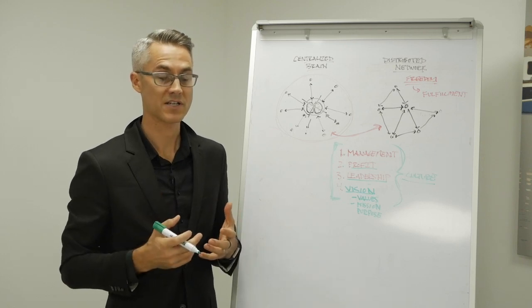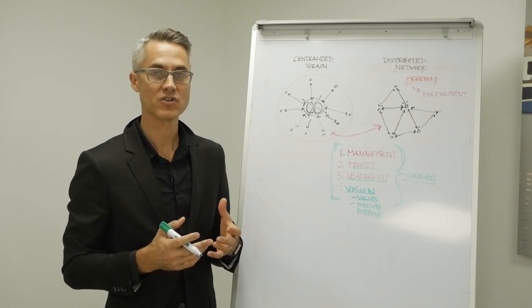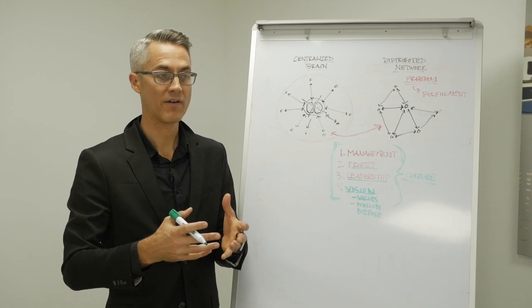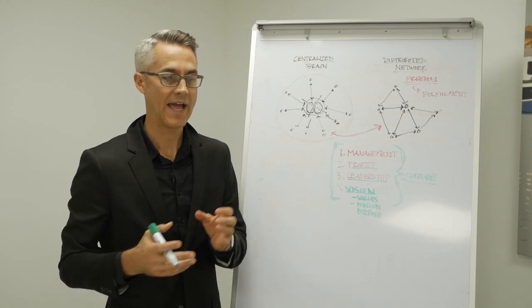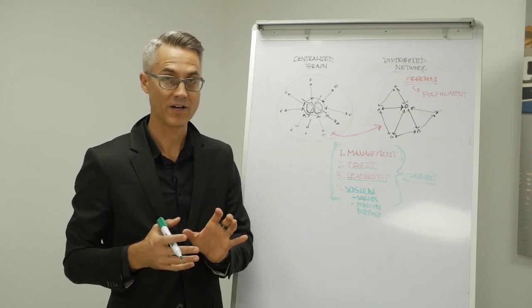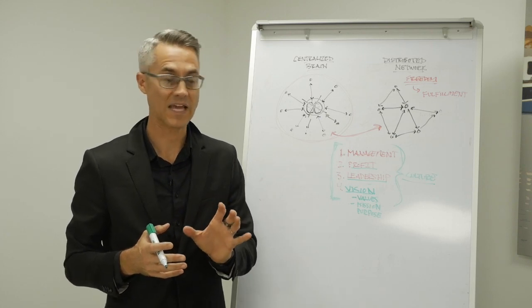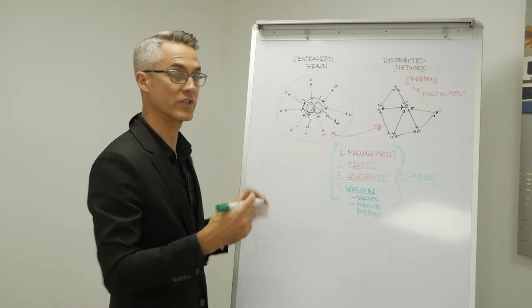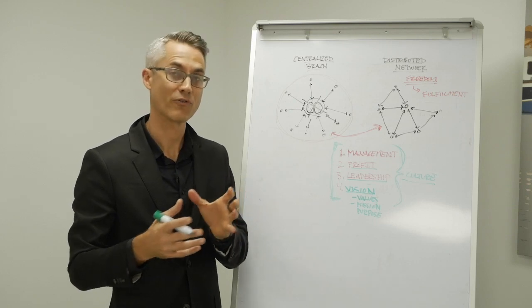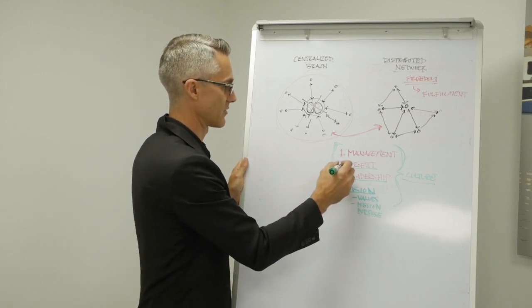but also making sure that we know the profit that we're going to be making on that project. And if we're not going to be making a profit on that project, we are very intentional about that because sometimes that might be the game that we want to play. We can only do that when we're tracking the right key performance indicators. So number two is profit.